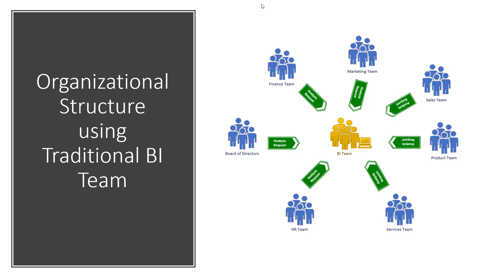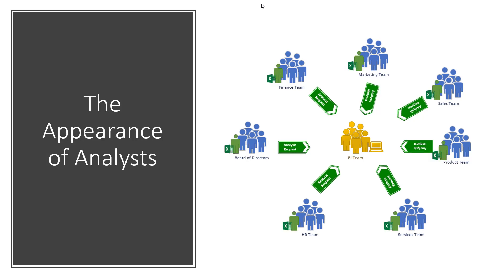Two problems: the disconnect and the bottleneck on the BI team. This gradually caused BI projects to become slower and slower, delivered with delays — sometimes so late that the requirement was no longer valid. This ended up with each team deciding to have their own person analyzing their data using Excel or a spreadsheet system. This analyst role actually existed in those teams even before the BI team was created.